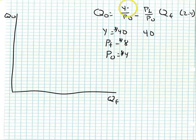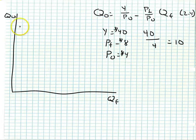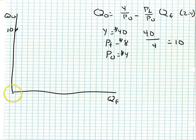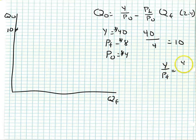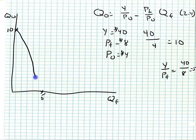We find the y-intercept by taking income over the price of other goods: $40 over $4 equals 10. Using the trick where we set the maximum quantity of other goods equal to zero, we get Y over P_f as the maximum quantity of food, which equals 5. Connecting those two points gives us a straight budget line showing all possible combinations of food and other goods the family can purchase if it exhausts its income.